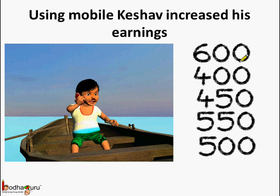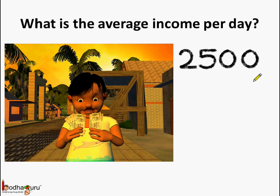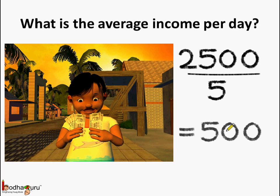These are the incomes he got per day for 5 days. If we add all of these: 5 plus 5 is 10, carry over 1, and adding all gives us 25 — so the total earnings of the 5 days is equal to 2500 rupees. This much he earned in 5 days. To find the average income per day we divide by 5: 2500 divided by 5 equals 500. So the average income per day became 500 rupees.